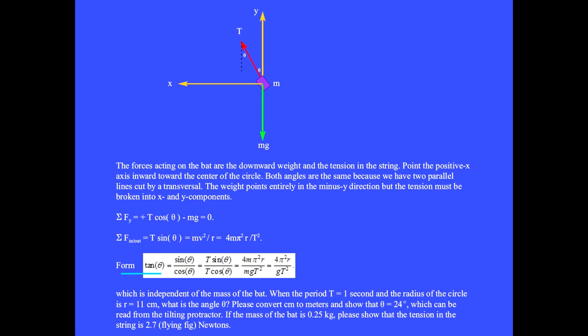Once again, forming tan theta equals T sine theta over T cosine theta: T sine theta is 4mπ²R over the period squared and T cosine theta is Mg. After canceling the mass, we get 4π²R over gT², which is independent of the mass of the bat. When the period T equals one second and the radius of the circle is R equals 11 centimeters, please convert centimeters to meters and show that theta equals 24 degrees, which can be read from the tilting protractor. If the mass of the bat is 0.25 kilogram, please show that the tension in the string is 2.7 newtons.